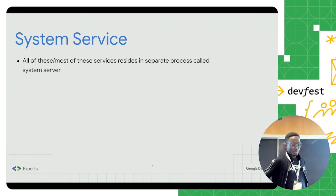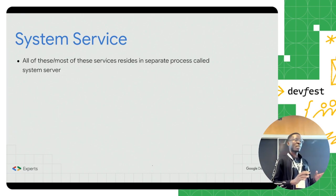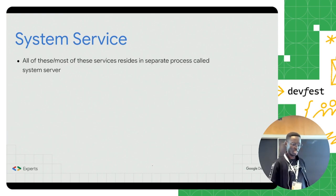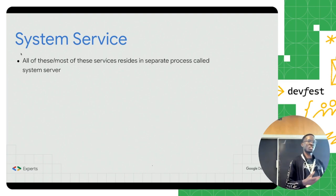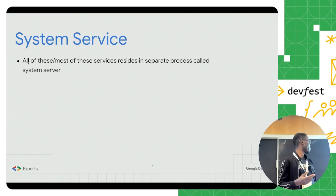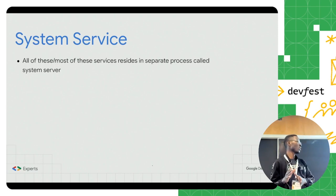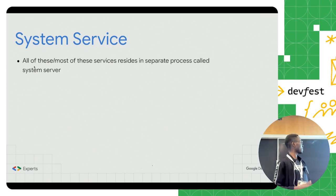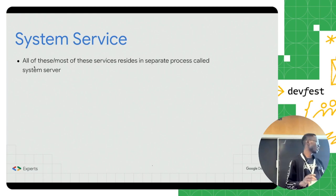The system service runs on a separate process. Every time you run an application, it runs on its own separate process, and the system service also runs on another process — not the same one running your main application. This design decision was made for security purposes, because we want an architecture that prevents other applications from having direct access to all the features available on the device. Every single application can be executed in isolation from the others.